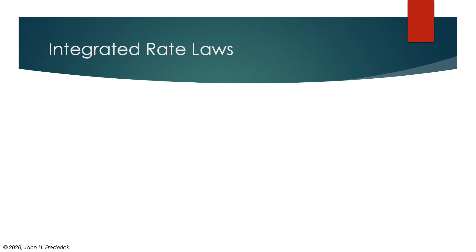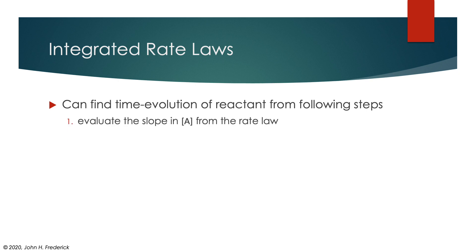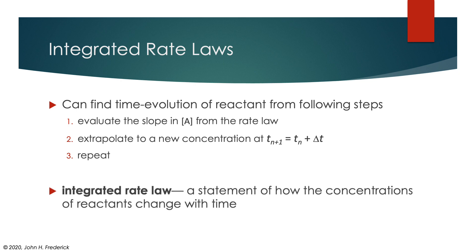In essence, what I have done is mechanically created an integrated rate law. This is basically a way of determining the time evolution of a reactant. We can do it for any reaction by just simply following these steps: evaluate the slope and the concentration from the rate law, extrapolate to a new concentration at another time, a later time, as we did in the graph on the previous slide, and just repeat. Eventually, what we'll get is the integrated rate law, which is a statement of how the concentrations change with time.